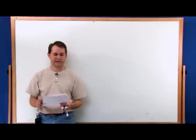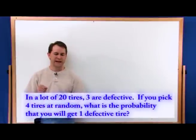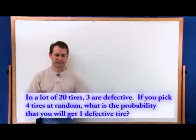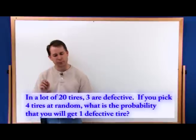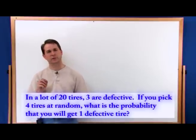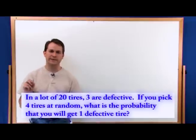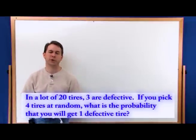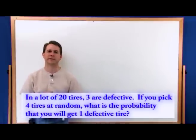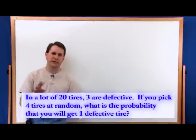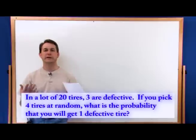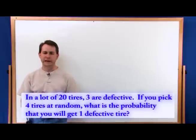The final problem in this section: in a lot of 20 tires, three of them are defective. If you pick four tires at random, what is the probability that you will get one defective tire? Again, this doesn't fit the simpler problems — there's too much information to just pick success and outcomes simply, so you need to think through it carefully using the same approach.